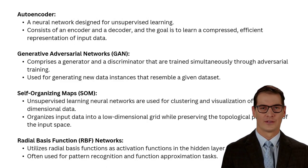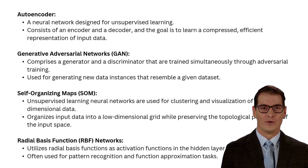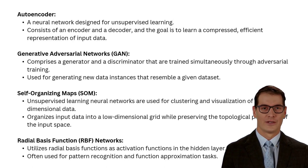Autoencoders, generative adversarial networks, self-organizing maps, and radial basis function networks are all types of machine learning algorithms, alongside artificial neural networks.